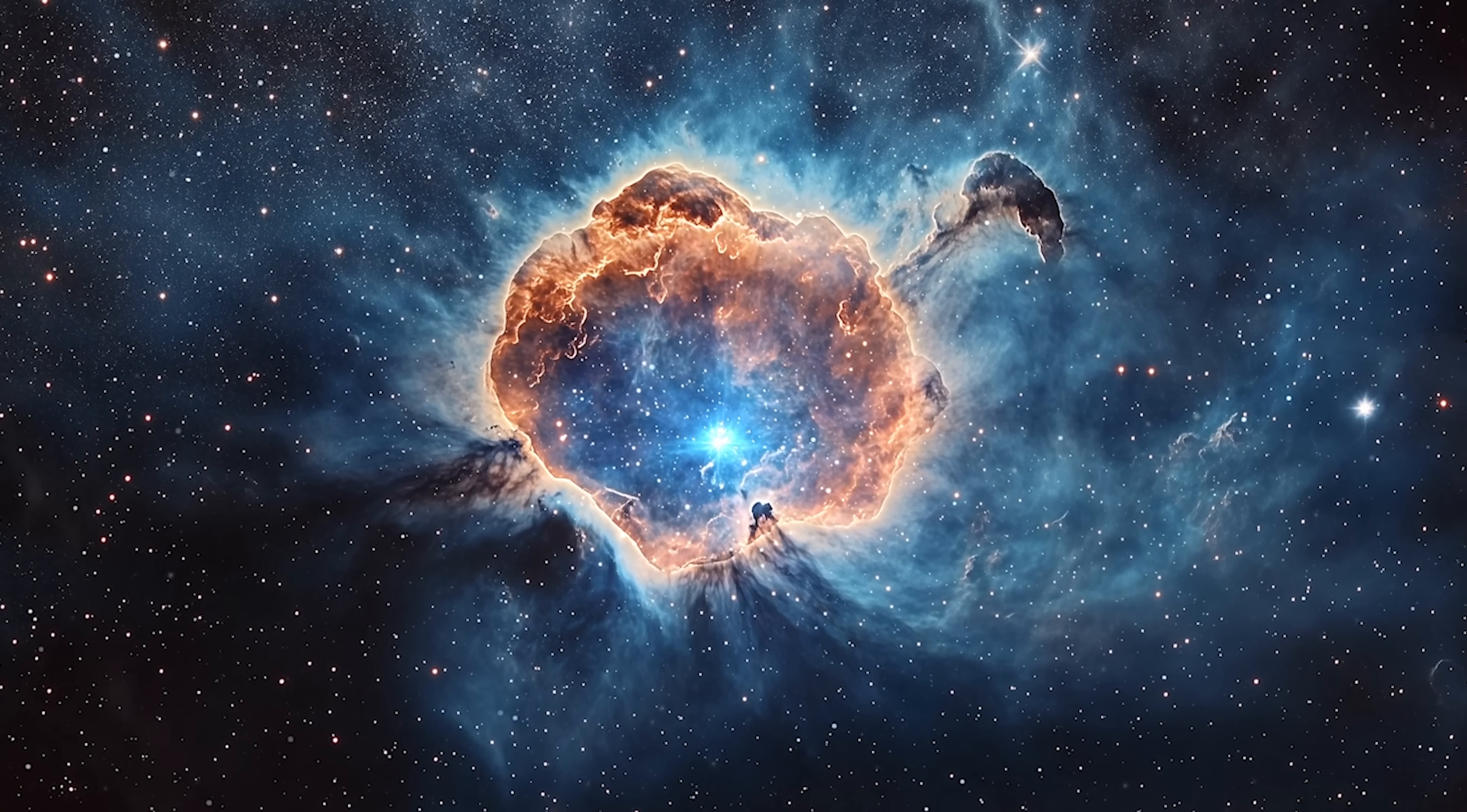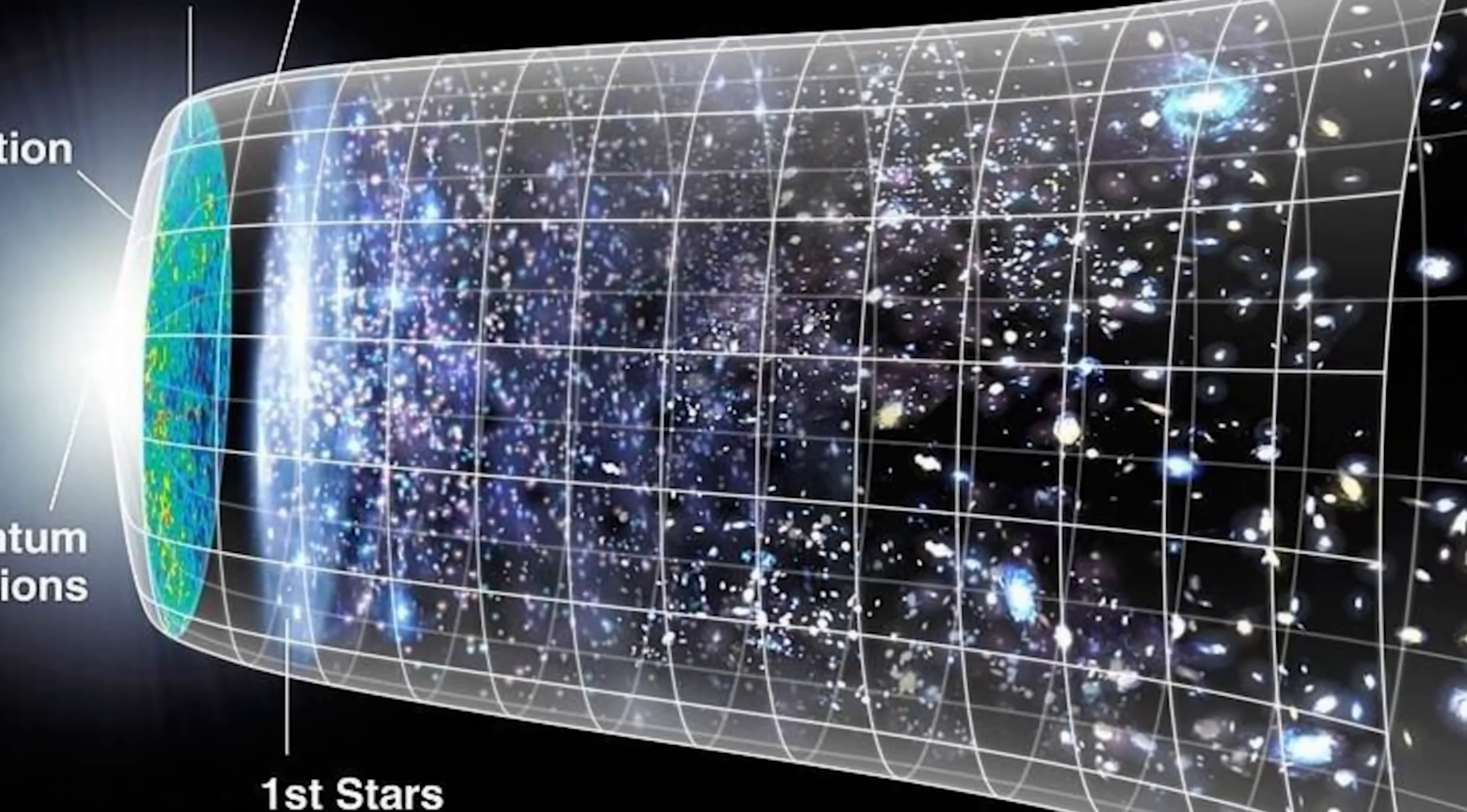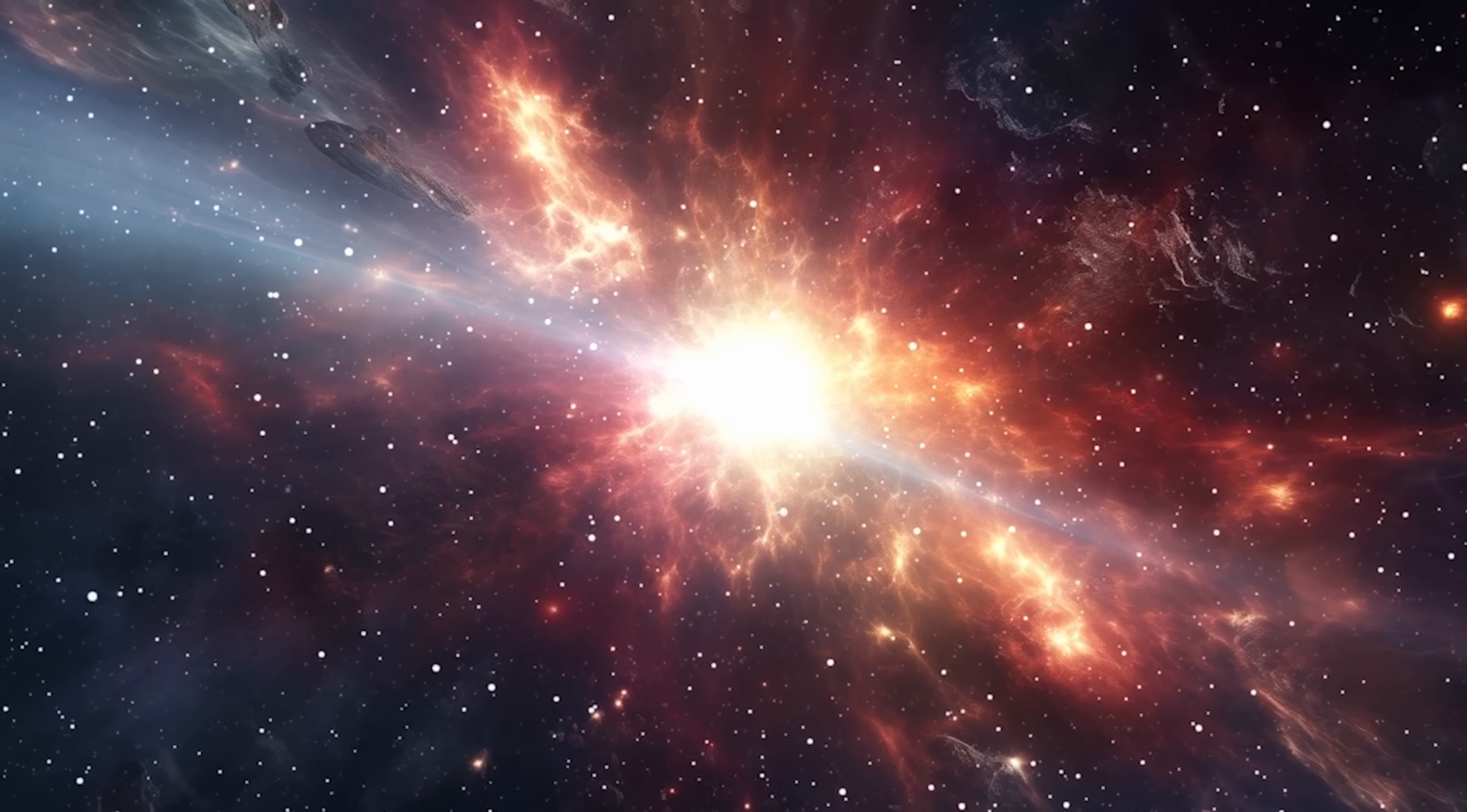Dark energy is the name for the unknown force causing the universe's expansion to accelerate. In the standard model, it's treated as a cosmological constant, an idea Albert Einstein once called his biggest blunder. In this view, dark energy is a smooth, unchanging property of space itself. But what if it's not constant? The Webb telescope's confirmation of the Hubble tension is giving serious momentum to a once-fringe idea, that dark energy evolves. Perhaps it's a dynamic, changing field, something scientists call early dark energy.